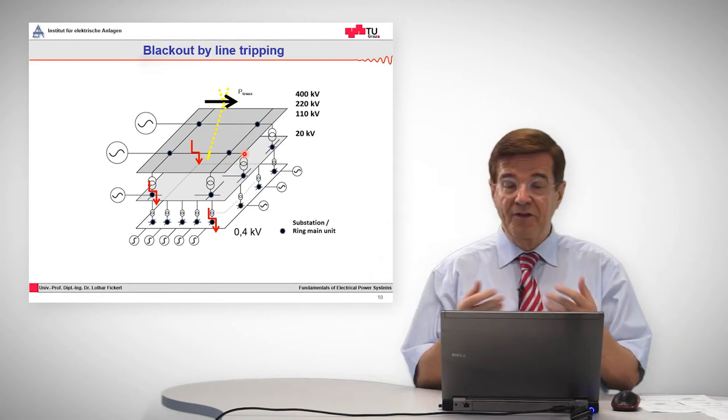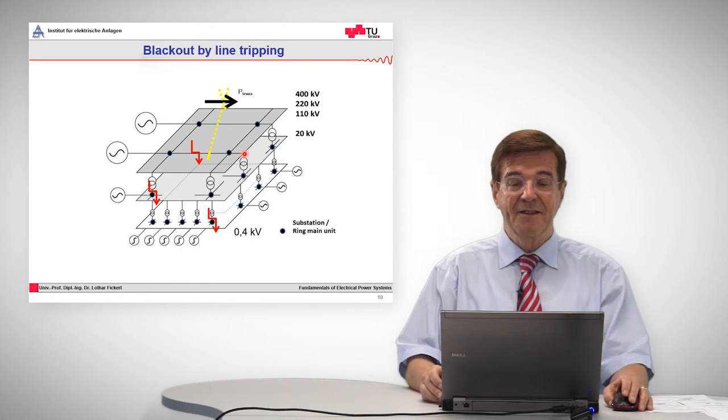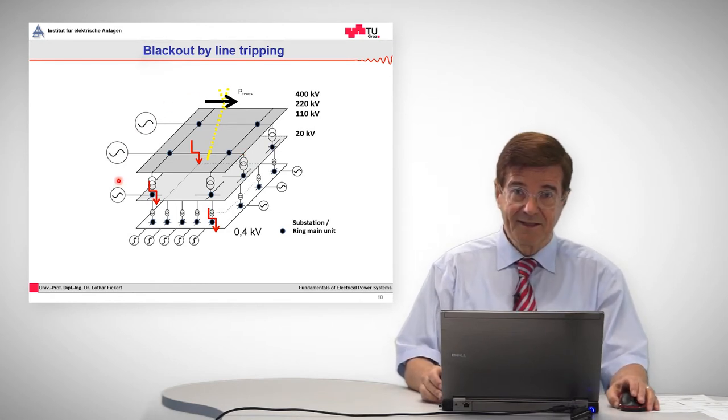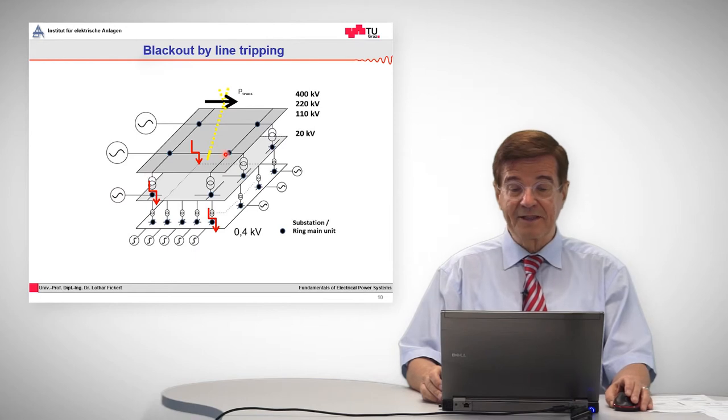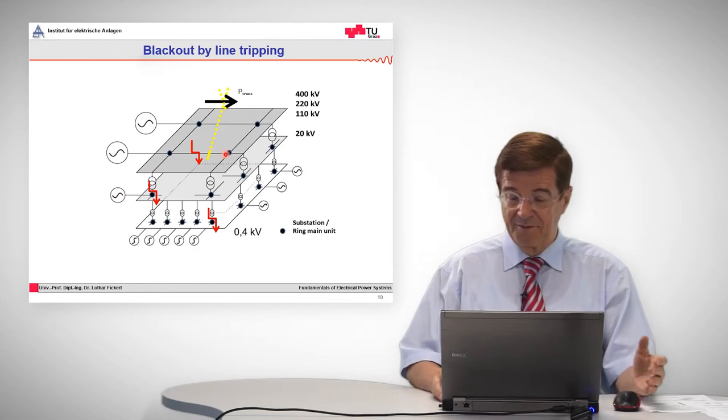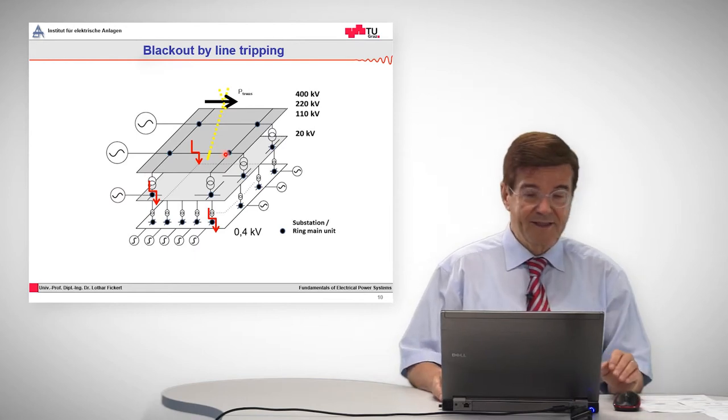The regulators have no chance to do anything about that. By the way, they are on the wrong side of the grid, so they will not see that. Because the frequency goes down, you have no power anymore and no voltage anymore. That is a system breakdown.